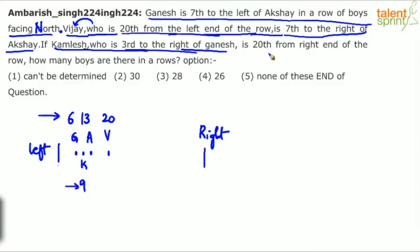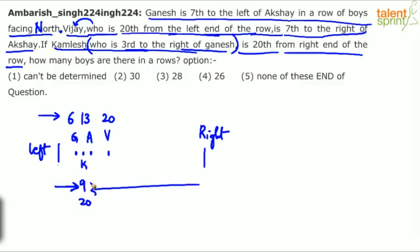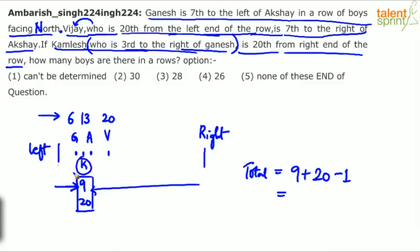Kamlesh, who is 3rd to the right of Ganesh, is 20th from the right end of the row. So Kamlesh's position from the right is 20th, and from the left it is 9th. When you know one person's position from both ends, the total number of persons equals left position plus right position minus 1. So total persons equals 9 plus 20 minus 1. We subtract 1 because Kamlesh has been counted twice — from the left and from the right. So 29 minus 1 equals 28. That is the final answer — option 3.